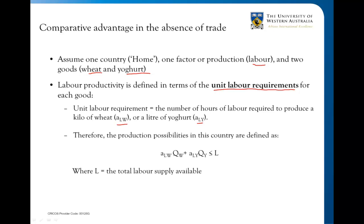In terms of the total production possibilities in this country — in other words, what's the maximum that we can produce — it's going to be defined by this equation: the unit requirements multiplied by the quantity of wheat, plus the unit requirements for a litre of yoghurt multiplied by how many units of yoghurt. And that, of course, has to be at most equal to the total labour supply available. You obviously can't produce more than what you've got in terms of total labour hours.